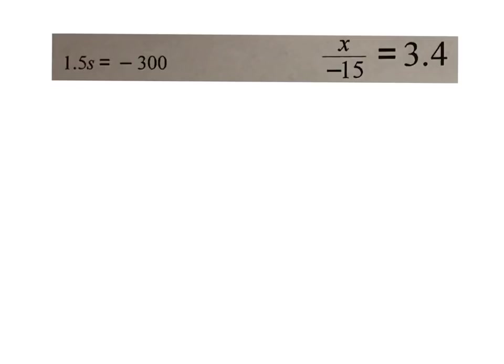I want to go ahead and do this next one with you as well. It's set up a little bit differently: 1.5s equals negative 300. Remember when a coefficient is right next to a variable, that means multiplication — so right now it's 1.5 times s. I need to get myself organized. It is multiplying by 1.5, so I'm going to divide by 1.5 on both sides. On the left, 1.5 over 1.5 is just 1, so that's how I get my s.